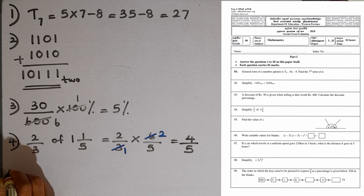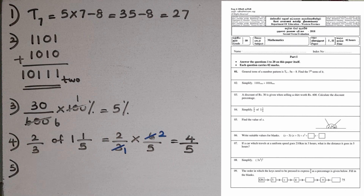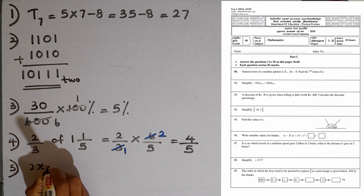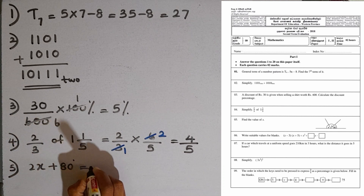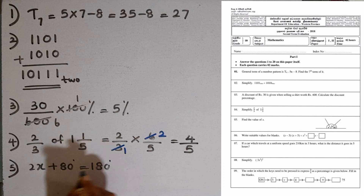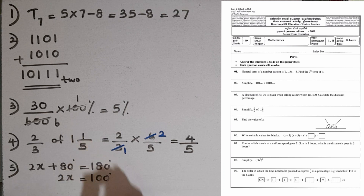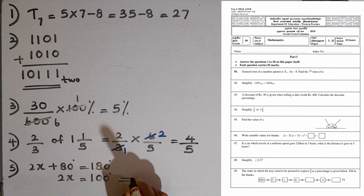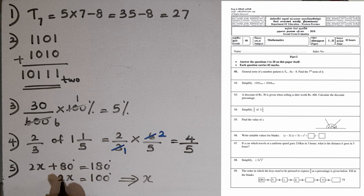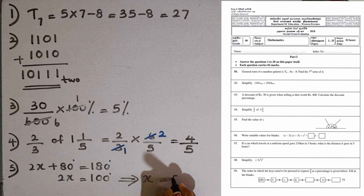In the fifth question, we are given a diagram. Find the value of x. These three angles are located on a straight line. The sum of angles on a straight line is 180 degrees. So we write 2x plus 80 equals 180 degrees. Then 2x equals 100, so x equals 100 divided by 2, which is 50 degrees.